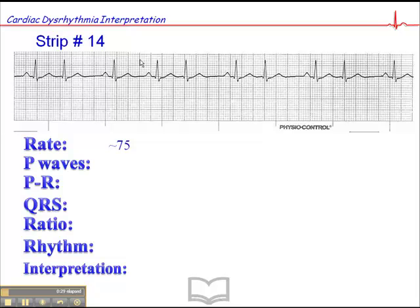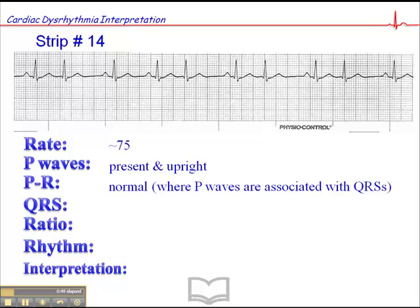Or you can try to find the underlying rhythm, where we have P-waves, QRS, P-wave, QRS, and measure the heart rate based on the distance between two sinus beats. P-waves are present and upright in the underlying rhythm. The PR interval where P-waves are associated with QRS is normal. The QRSs are all narrow, less than 0.12 second. The ratio where there are P-waves associated with QRSs is one-to-one, and the rhythm is irregular.